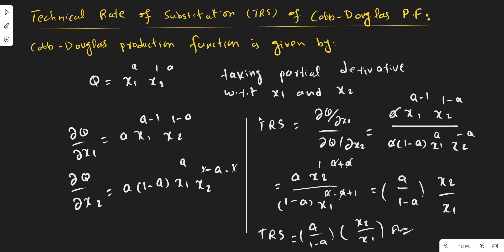The technical rate of substitution is the marginal physical productivity of factor x1 divided by the marginal physical productivity of factor x2. The first derivative of the production function with respect to x1 is this expression, and the first derivative of the production function with respect to x2 is this one.